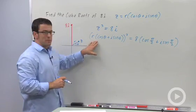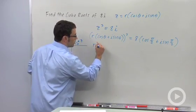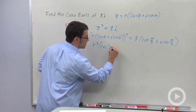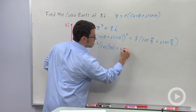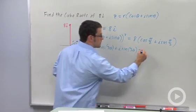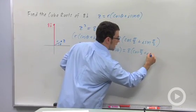All right, let's expand this, or let's simplify this using DeMoivre's theorem. We get r cubed cosine of, remember you multiply the argument by 3, cosine 3 theta, plus i sine 3 theta. And that equals 8 cosine pi over 2 plus i sine pi over 2.